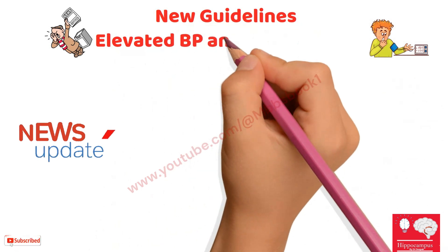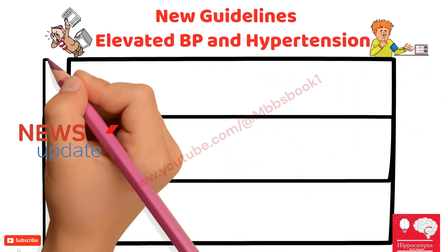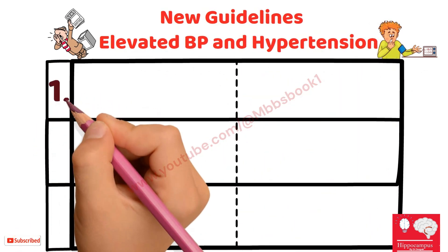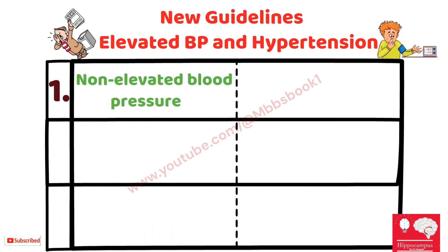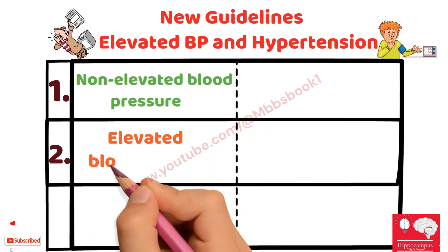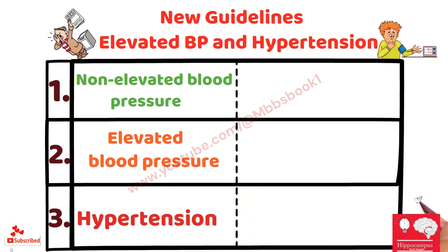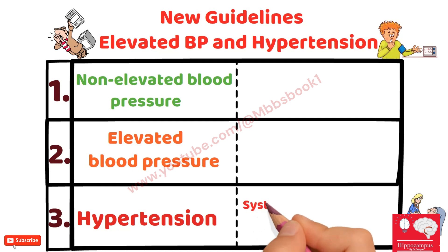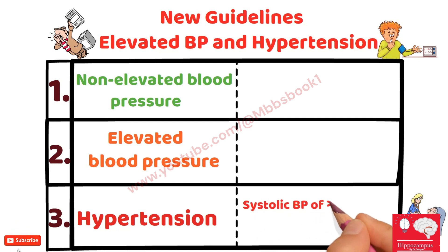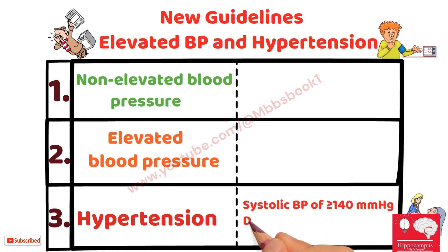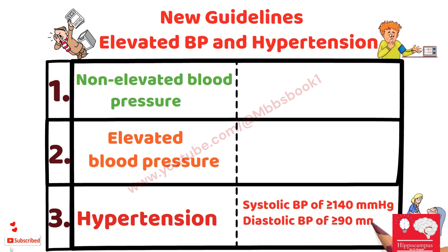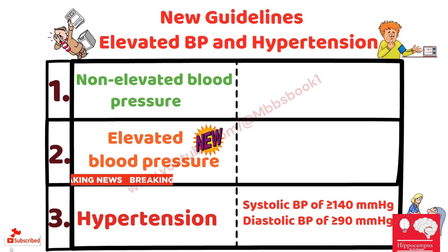There is a new blood pressure classification with three categories: number one, non-elevated blood pressure; number two, elevated blood pressure; number three, hypertension. This new guideline continues to define hypertension as an office systolic blood pressure of more than or equal to 140 millimeter of mercury or diastolic blood pressure of more than or equal to 90 millimeter of mercury.